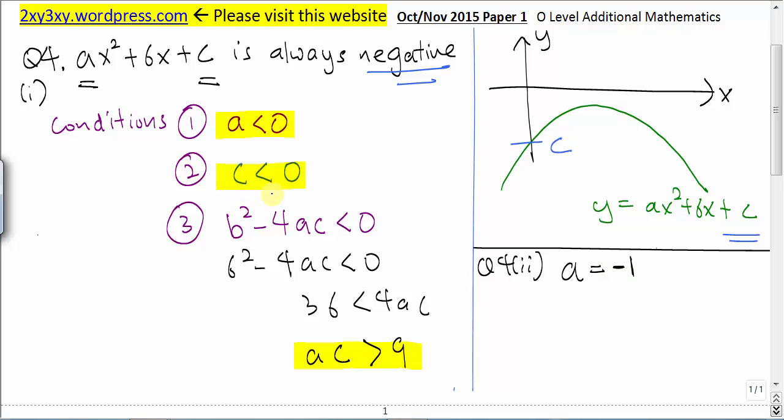c must be less than zero. c can be negative 1, negative 2, but at the same time, it has to fulfill this equation here. So since we let a to be negative 1, let's solve for c from this equation.